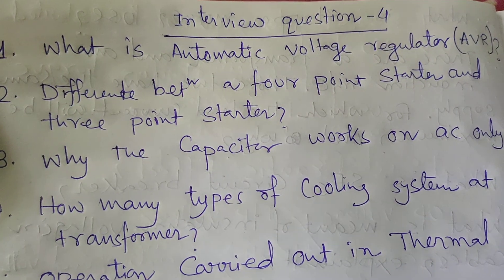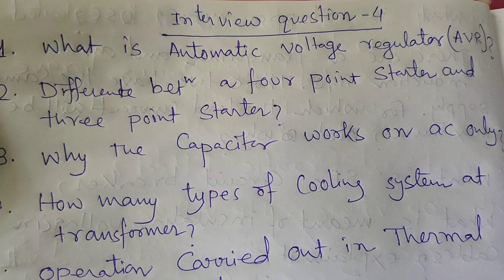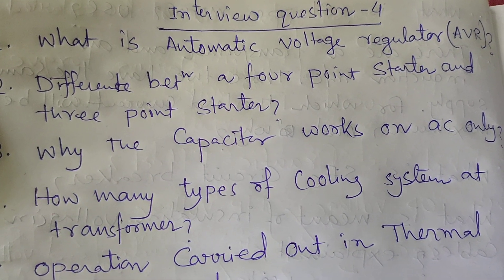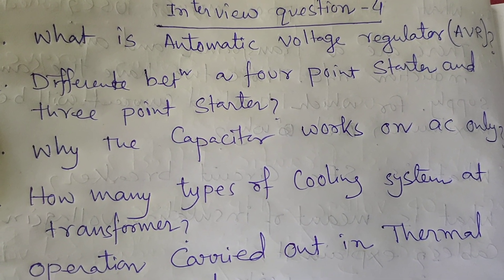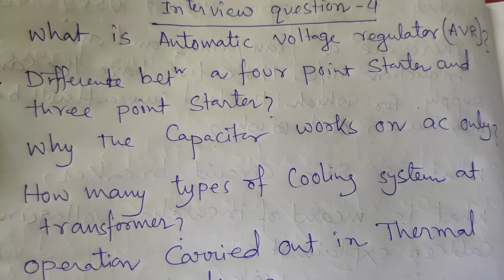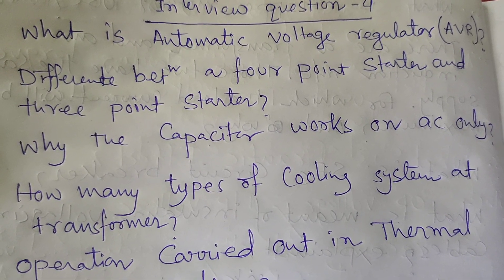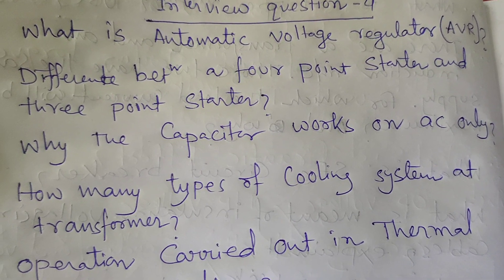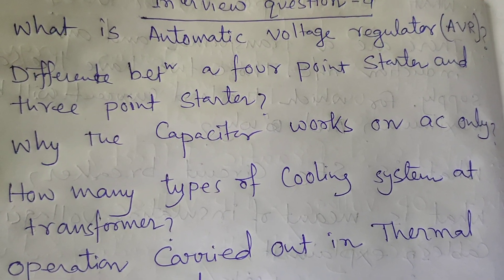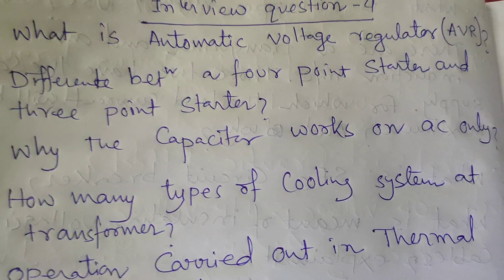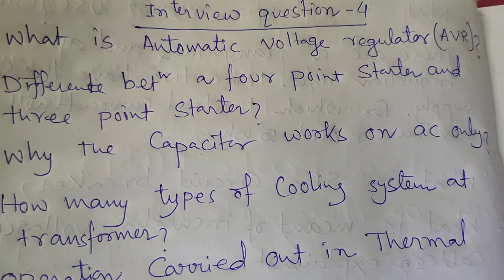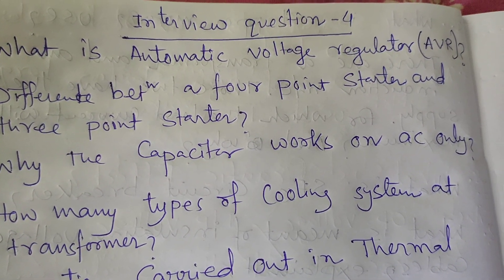First question: What is automatic voltage regulator? AVR is an abbreviation for automatic voltage regulator. It is an important part in synchronous generators. It controls the output voltage of the generator by controlling its excitation current, thus it can control the output reactive power of the generator.